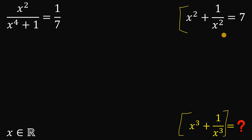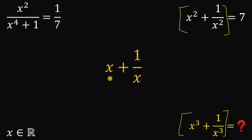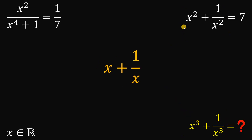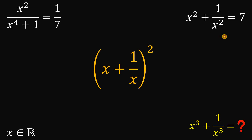Before finding x cubed plus one over x cubed, let's first find the value of x plus one over x, because once we know x plus one over x, we can get x cubed plus one over x cubed. To do this, let's square both sides of x plus one over x, using the result x squared plus one over x squared equals seven.